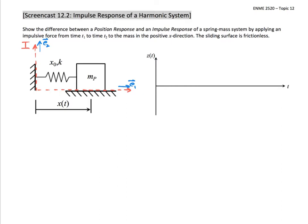We defined a coordinate system transformation where z as a function of t is equal to x as a function of t minus x0, where x0 is the resting length of the spring. Drawing this on our system, we mark the resting length of the spring and our coordinate z moves from this equilibrium point. Our mass p is extended so that it's stretched beyond the equilibrium point of the spring.